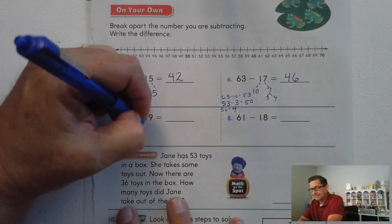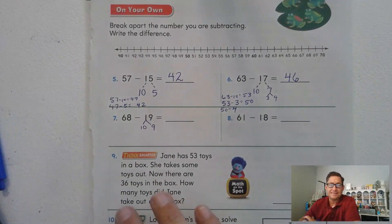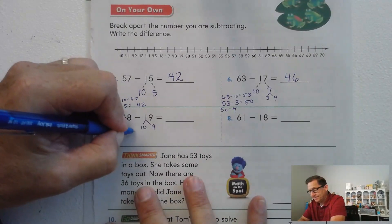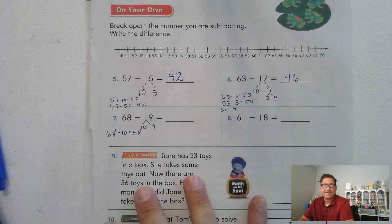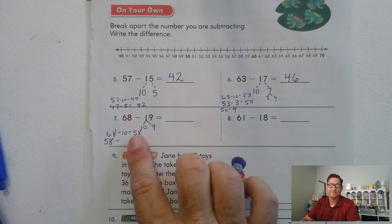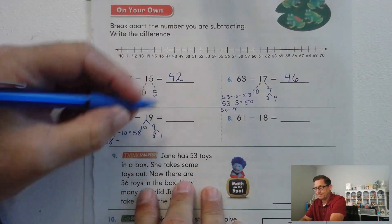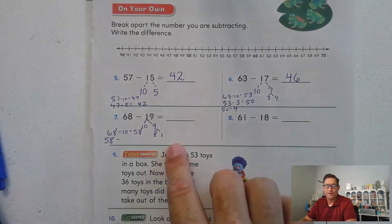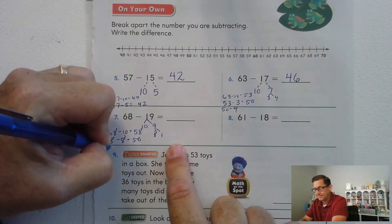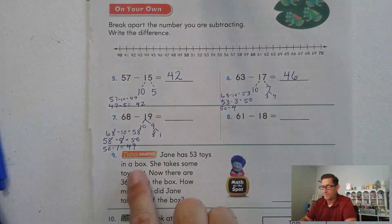68 minus 19. Make the 19 into 10 and 9. 68 minus 10 is 58. What do we want to subtract from the 58 to make a 10? 8. So split the 9 into 8 and 1. 58 minus 8 is 50. 50 minus 1. One number comes before 50: 49.